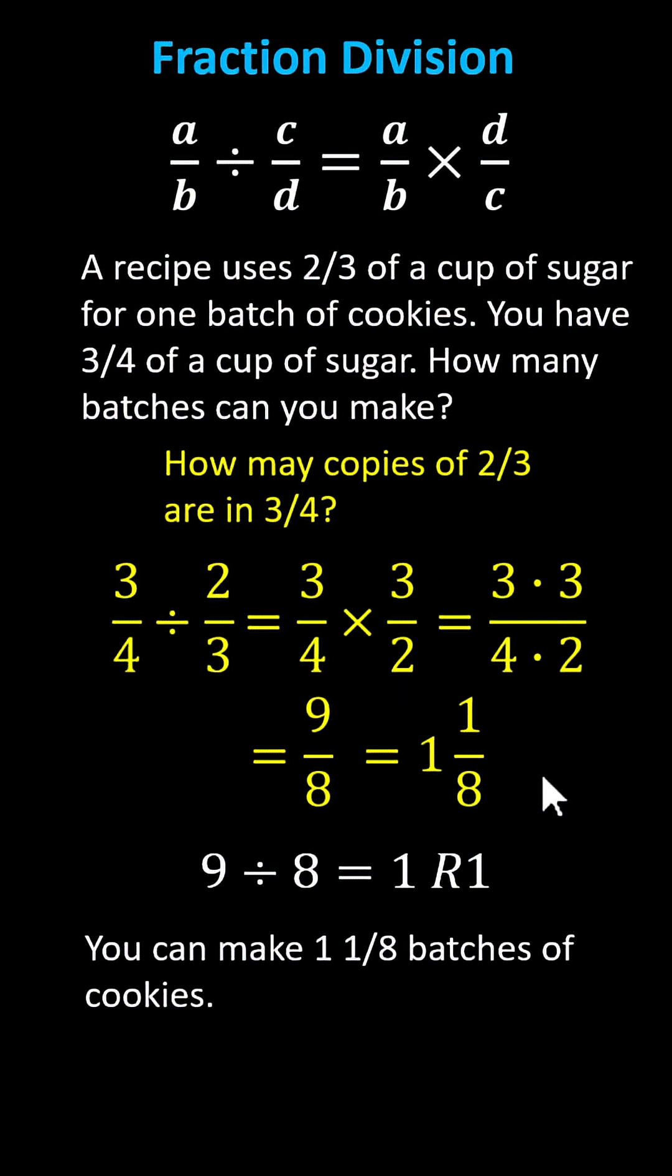This means you can make one and one-eighth batches of cookies if you have three-fourths of a cup of sugar and the recipe requires two-thirds of a cup of sugar. I hope you found this helpful.